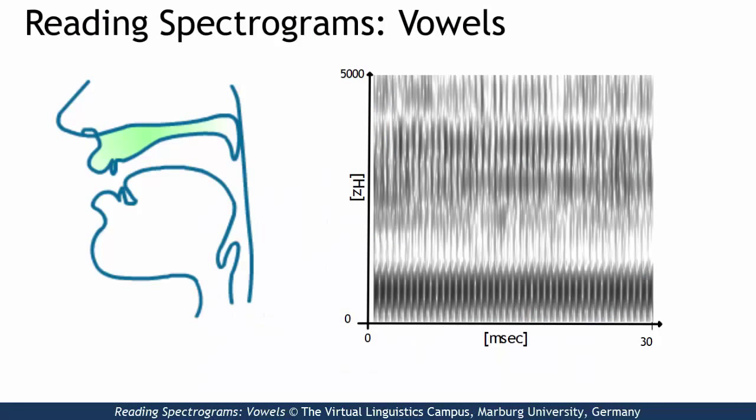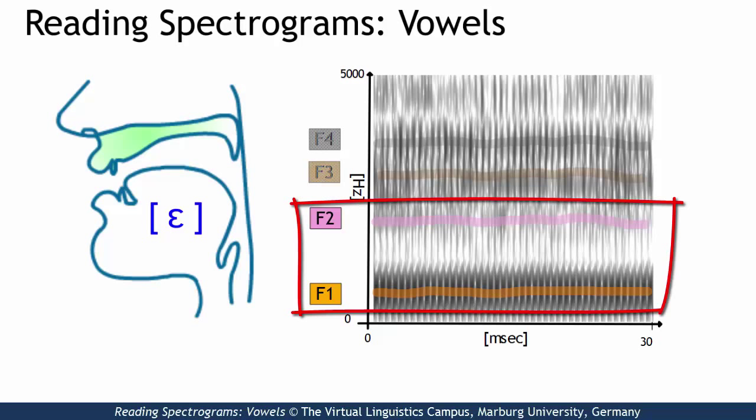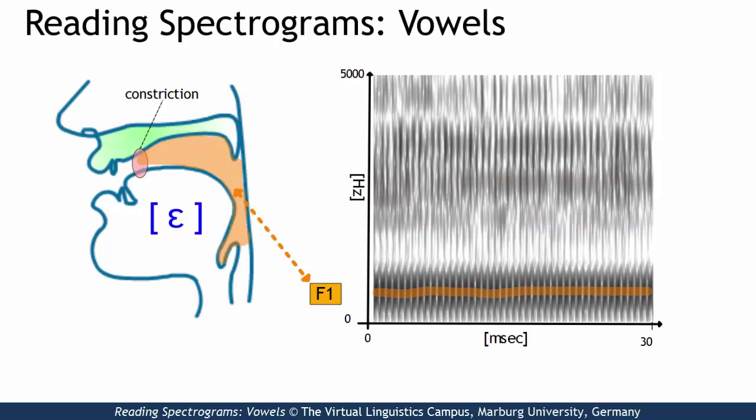Vowels have a fully developed formant pattern and can be classified on the basis of their first two formants, F1 and F2. These resonance frequencies can approximately be associated with the size of two cavities separated by a constriction in the vocal tract, F1 with the size of the pharynx and F2 with the size of the oral cavity.